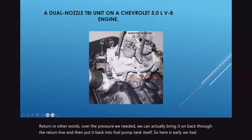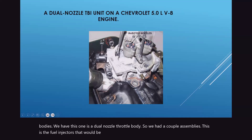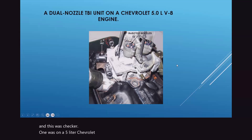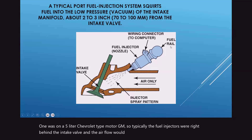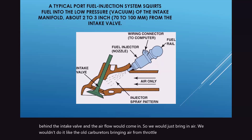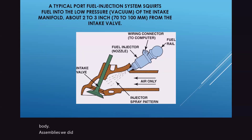Early on we had throttle bodies. This is a dual-nozzle throttle body with a couple of assemblies. The fuel injectors are built into the throttle body assembly and were serviceable — one was on a 5-liter GM motor. Typically the fuel injectors were right behind the intake valve and airflow would come in. On throttle body assemblies we did mix fuel and air through the throttle body assembly itself.